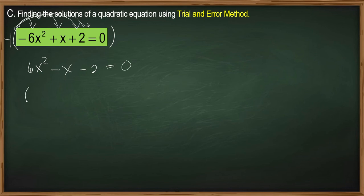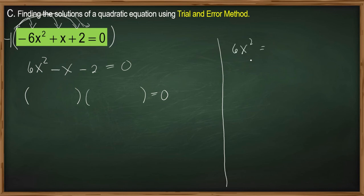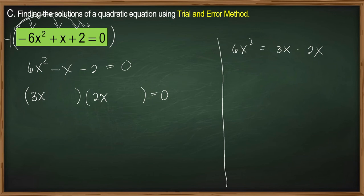Now we prepare two parentheses to write our factors and the working area. What are the factors of 6x squared? We could use 6x times x, but looking at the linear term coefficient of 1 and the constant of 2, that seems too large. What if we use 3x and 2x? So 3x times 2x. Our constant term is negative 2. The factors of negative 2 could be positive 2 and negative 1, or negative 2 times 1.